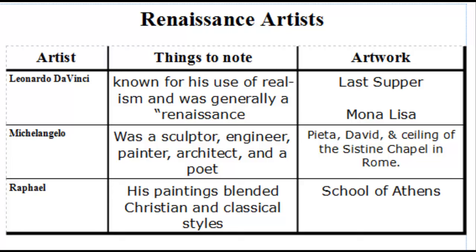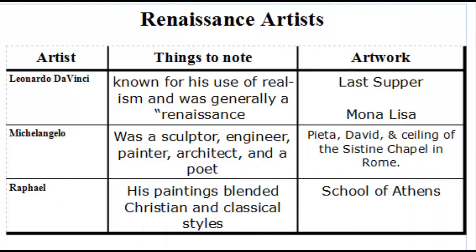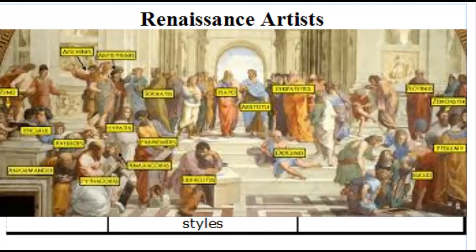Raphael is our third artist. His paintings tended to blend both religious and classical styles. His most famous work is the School of Athens, where he paints himself and other leading Renaissance artists and thinkers into the painting, along with some Greek thinkers. You can do a Google search for 'School of Athens plus famous faces' and it'll pull up all the famous people he painted into the picture.